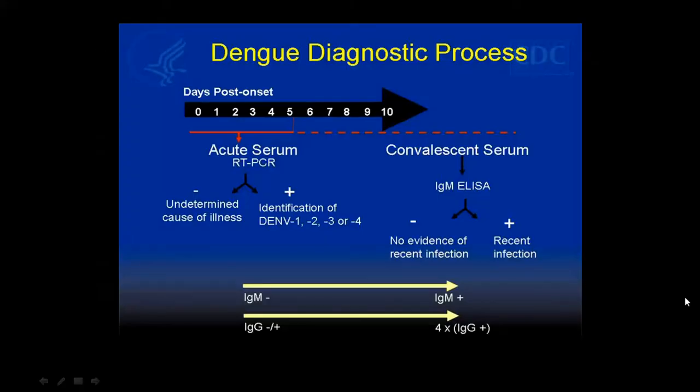If a person has had fever for up to five days, it is best to do either antigen detection or viral RNA detection. After five days, you can very well detect Dengue with the help of antibodies like IgM ELISA.